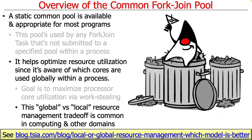Java wants you to do it globally, and the Common Fork Join Pool follows a similar idea. There are also trade-offs in management — even in business school management — around whether to have global or local resource allocation within a company. There are always pros and cons and trade-offs, but this global approach is how the Common Fork Join Pool is designed.